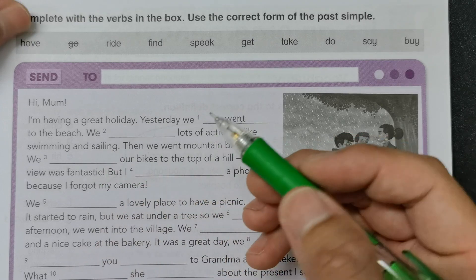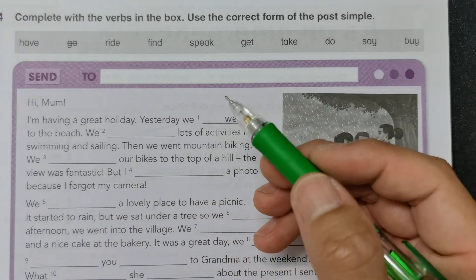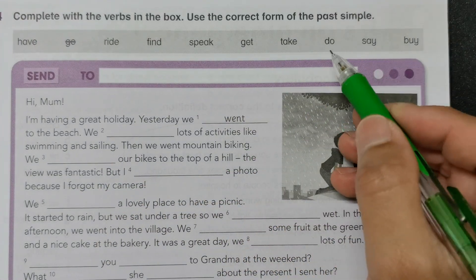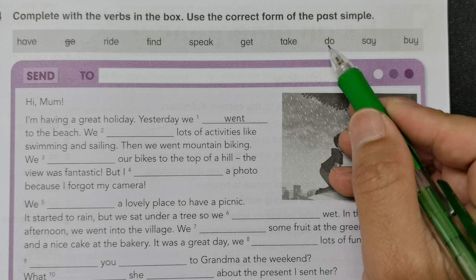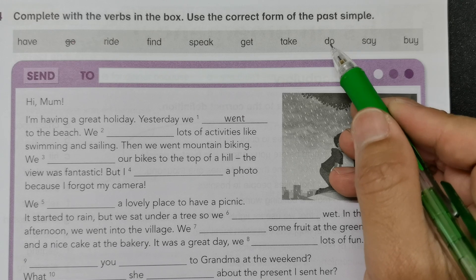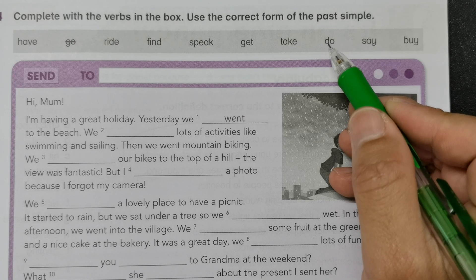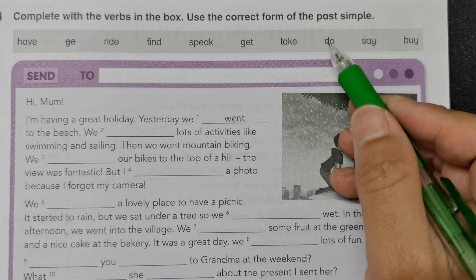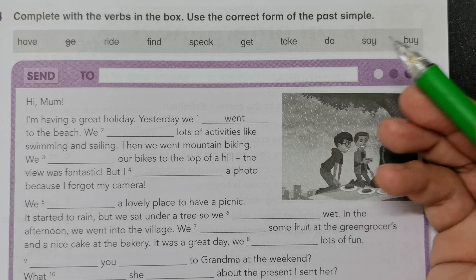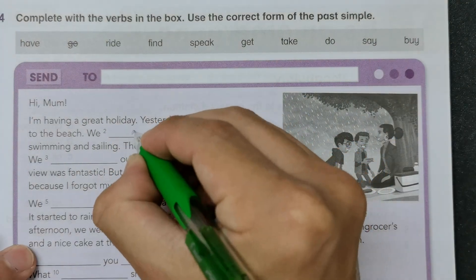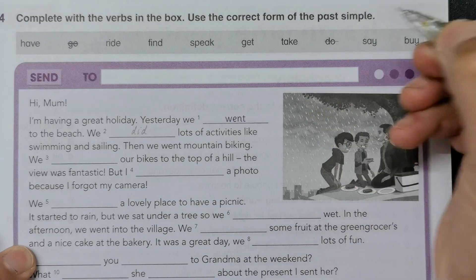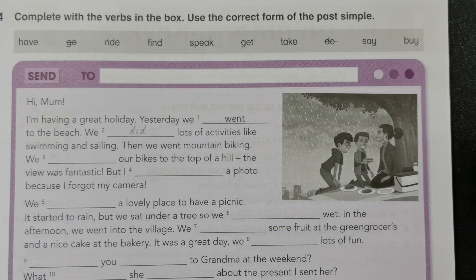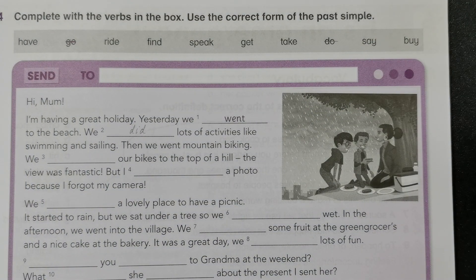So number two: 'we' — basically this is 'do lots of activities'. So the past simple or past tense of 'do' is 'did'. So we will write it as 'did'. We did lots of activities like swimming and sailing.